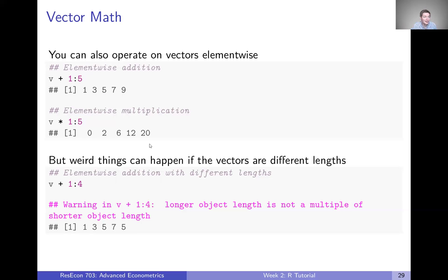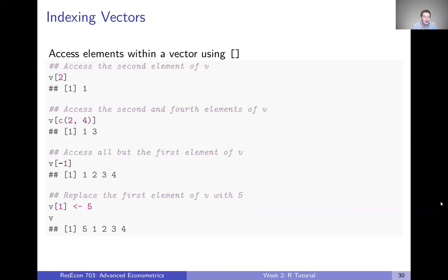Multiplication works exactly the same way as addition here. If we take our zero through four V vector and multiply it by one through five, it's going to multiply the first element, the second element, the third element, and so on. The thing to be aware of is what happens when you try to add vectors of different lengths — it doesn't really work well. R does weird things where it starts recycling from the beginning of the shorter vector. It will give you a warning if you do this, so you can see it tries to add a five-element vector plus a four-element vector and gives a warning that they aren't the same length.